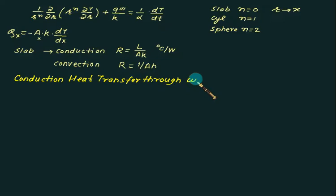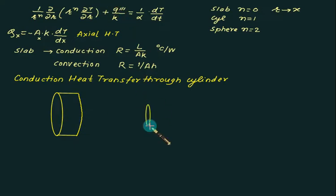In case of slab we have only pure axial heat transfer, whereas in the case of cylinder we have axial and radial heat transfer in both directions. It can transfer along the longitudinal axis as well as along the radius. When you calculate heat transfer through cylinder, be careful whether it is axial or radial.